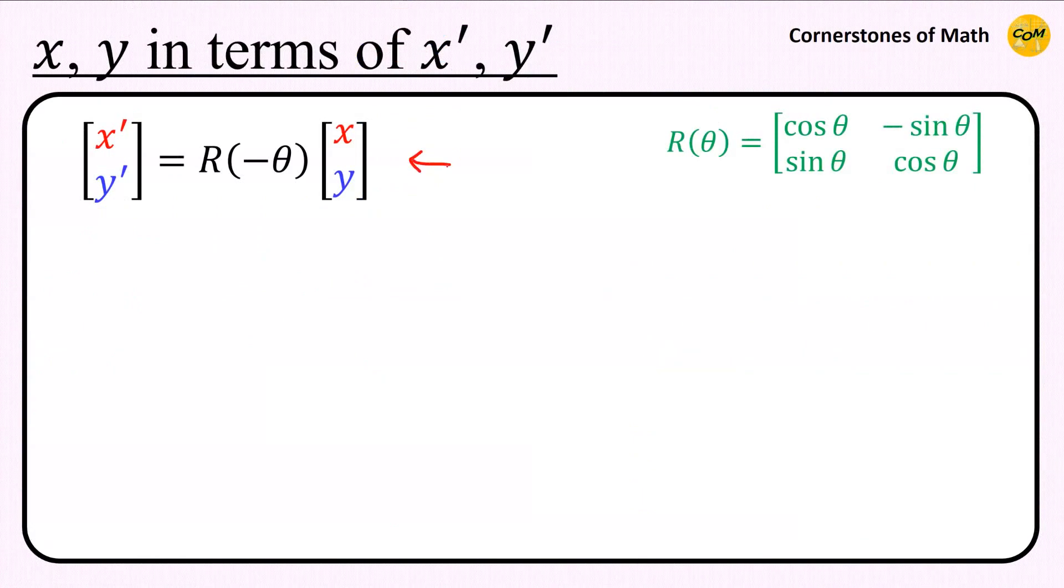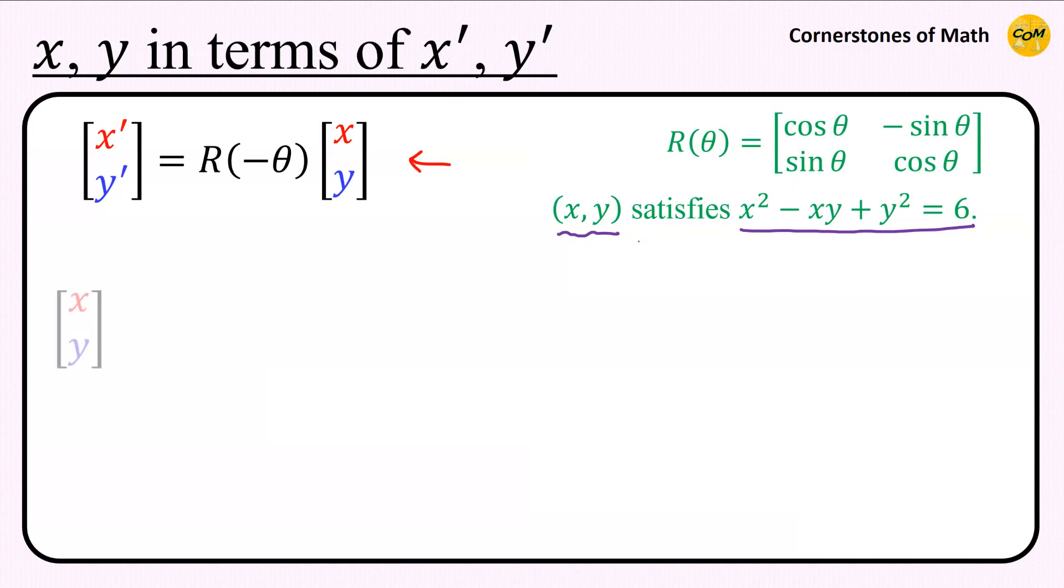So, we can say that column vector [x prime, y prime] equals the rotation matrix R(minus theta) times the column vector [x, y]. So, we have obtained this, but this isn't really a useful relation, because it is point (x, y) that satisfies the equation of the rotated conic section, not x prime comma y prime.